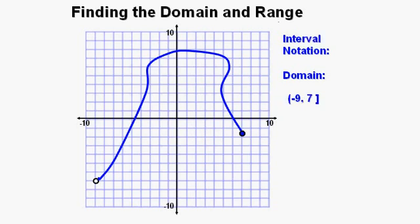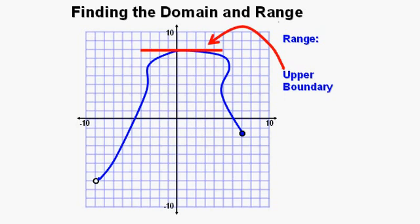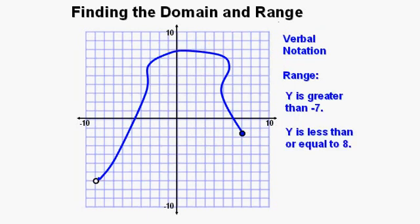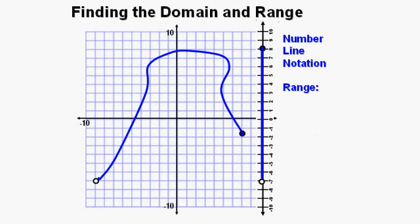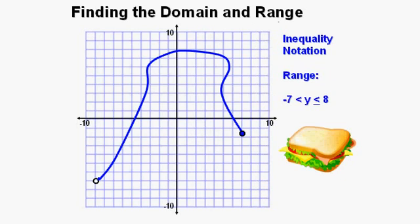For interval notation, we have open parentheses, negative 9, comma, 7, closed bracket. Now let's look at the range of this relation. We look at the upper boundary and the lower boundary. The upper boundary is at y equals 8 and the lower boundary is at y equals negative 7. Using verbal notation, the range is y is greater than negative 7 and y is less than or equal to 8. The number line notation shows an open point for greater than negative 7 below, a solid closed point at the top for less than or equal to 8, and the line segment filling in everywhere in between.